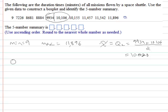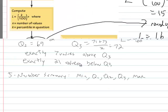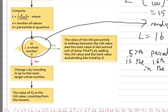Now let's use our processes to find the first quartile, which is the 25th percentile. We use our flowchart. We'll say l equals k over 100 times n, which would be 25 hundredths times 10, so there's 10 values in the list. This is going to be 2.5. According to the flowchart, when l is not a whole number, we're supposed to go down here and change l by rounding up to the next largest whole number.